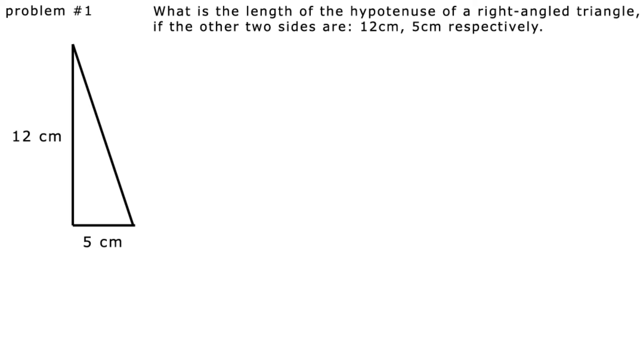Problem number one. What is the length of the hypotenuse of a right-angled triangle if the other two sides are 12 cm and 5 cm respectively? Well, we let the length of the hypotenuse be h cm.